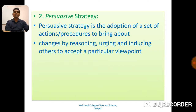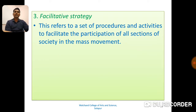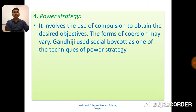Number two, persuasive strategy — the adoption of a set of actions or procedures to bring about changes by reasoning, urging, and inducing others to accept a particular viewpoint. Number three, facilitative strategy — this refers to a set of procedures and activities to facilitate the participation of all sections of society in the mass movement. Number four, power strategy — it involves the use of compulsion to obtain the desired objectives. The forms of coercion may vary. Gandhiji used social boycott as one of the techniques of power strategy.